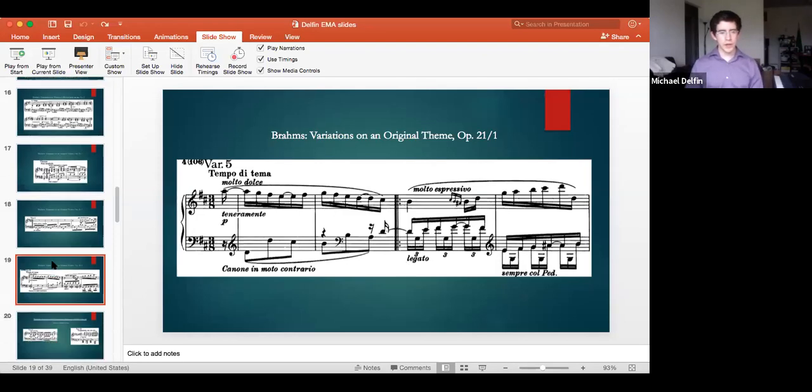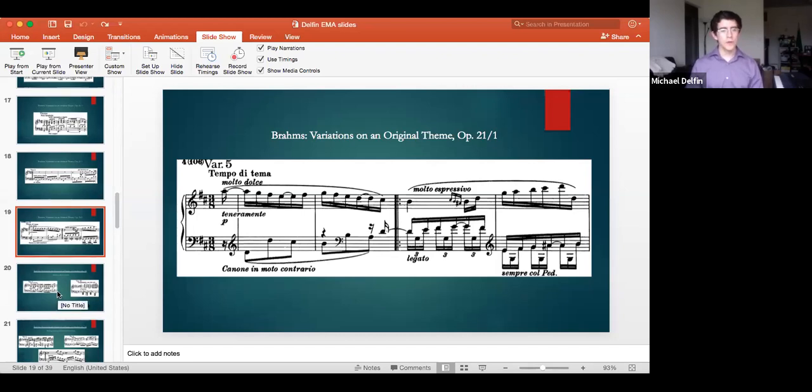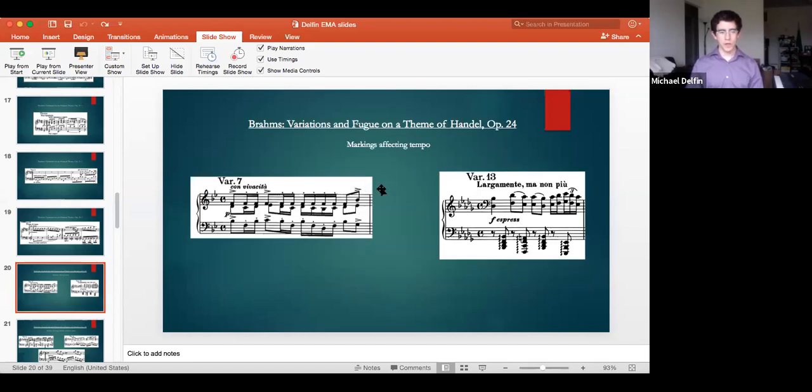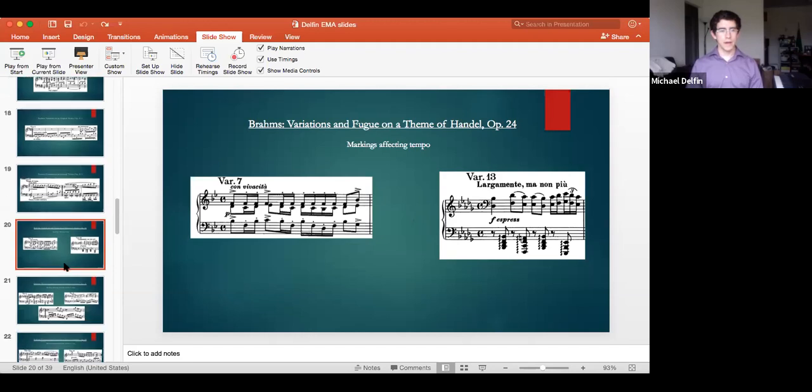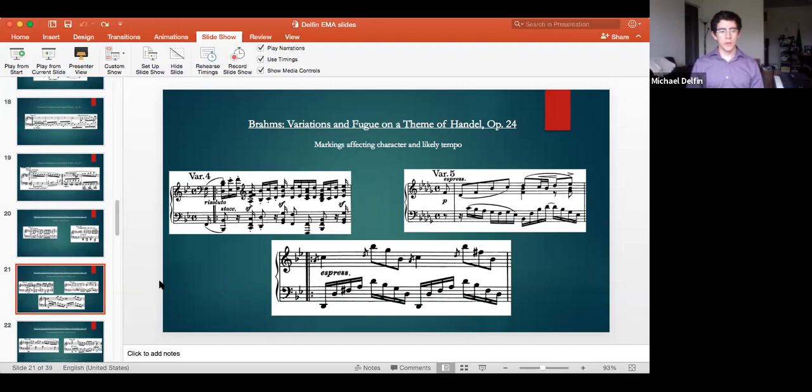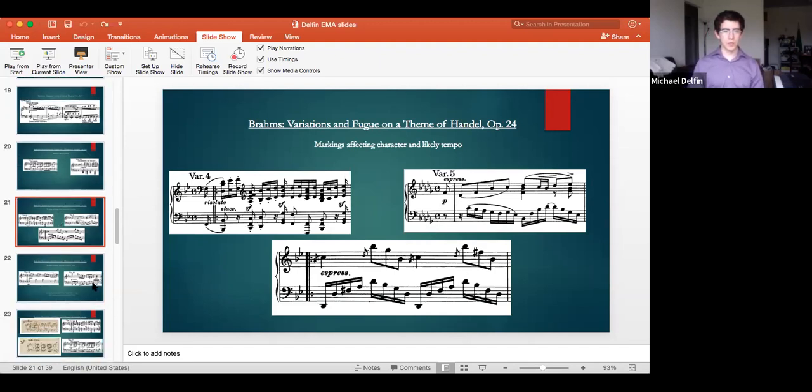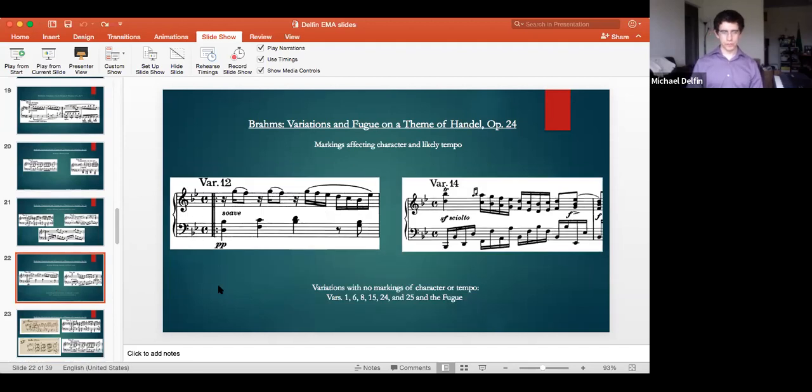A brief survey of these variations reveal categories of markings, and I've found three. First, certain markings directly affect tempo. We see con vivacità in variation 7 and largamente ma non più in variation 13. Second, and more prominently, certain markings affect character and likely tempo. We see risoluto in variation 4, espressivo in variations 5 and 21, suave in variation 12, and sciolto meaning nimble or lightly in variation 14. And the third category is that some variations have no markings at all, specifically 1, 6, 8, 15, 24, 25, and the fugue, but they all immediately follow variations with specific markings themselves.